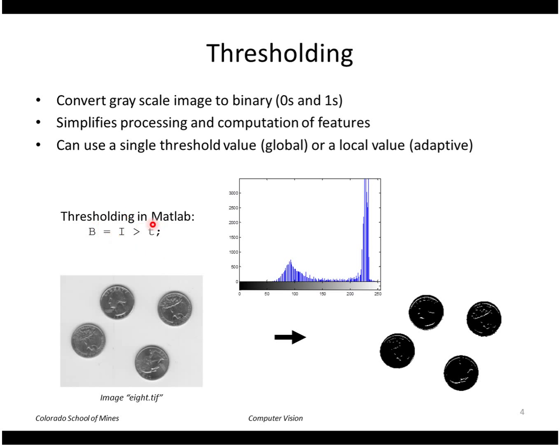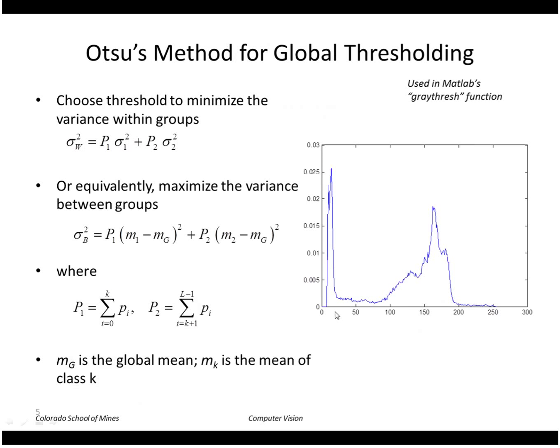I could threshold it in MATLAB using this expression here: I greater than t, where t is the threshold value. So that will give me true where those pixels are greater than t and 0 or false otherwise. So that would convert my image to a binary image like this, where I had light here and dark here.